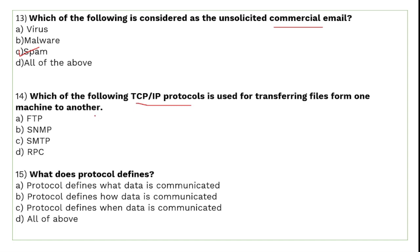The TCP/IP protocol used to transfer files from one machine to another is File Transfer Protocol (FTP). A protocol defines what data is communicated, how data is communicated, and when data is communicated — from one device to another. So the answer is D: all of the above.